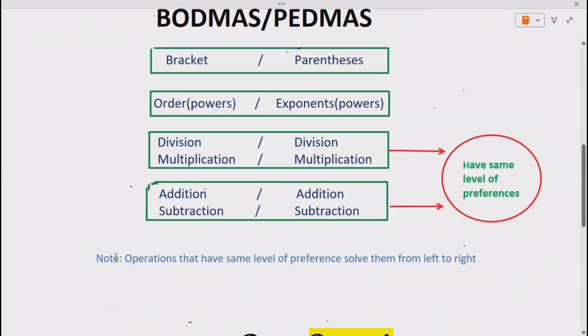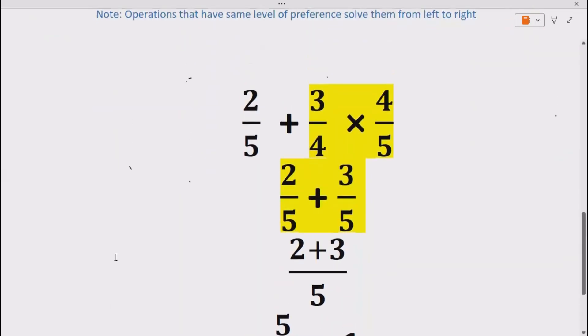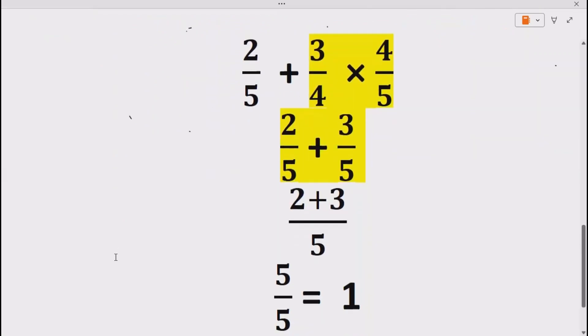from left to right. Now let's see how we can solve our expression using this method. So we are given 2/5 + 3/4 × 4/5.